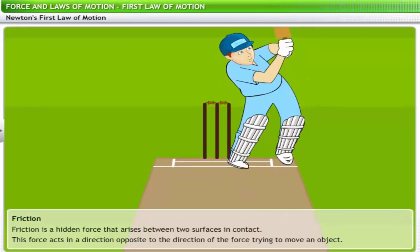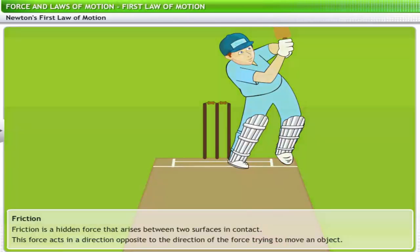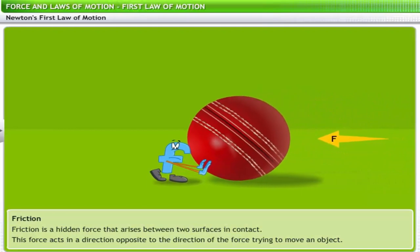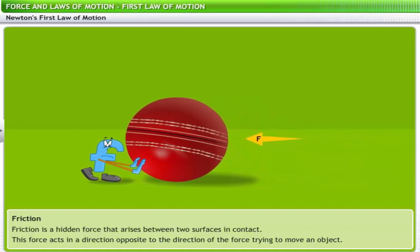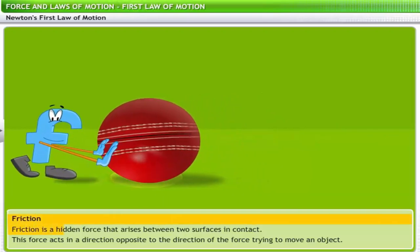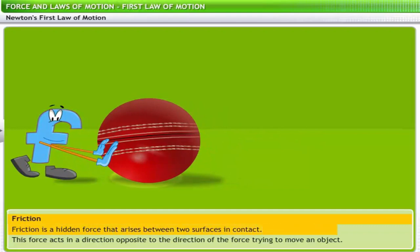You may have questions about the validity of this law — this is not how things really work around you, is it? For example, if a batsman strikes a ball, the ball eventually comes to a stop no matter how forcefully the batsman hits it. This has been explained through the concept of friction — friction is a hidden force that arises between two surfaces in contact, acting opposite to the direction of the force trying to move an object. Friction is used in our daily lives to slow down and stop moving objects.